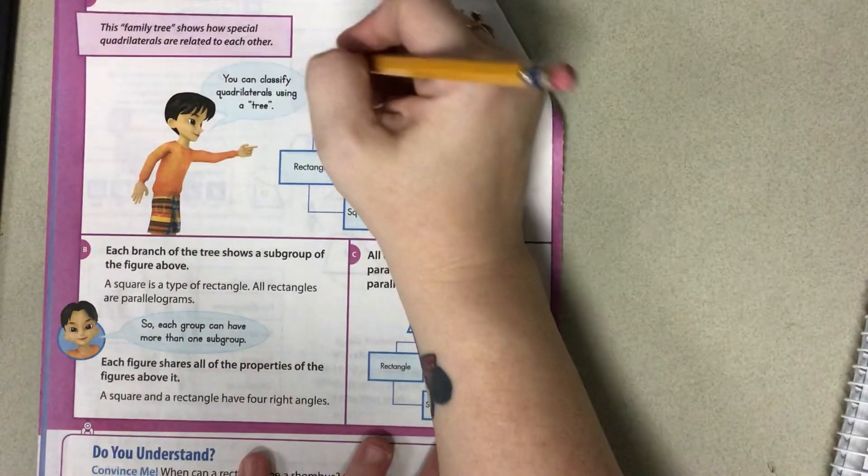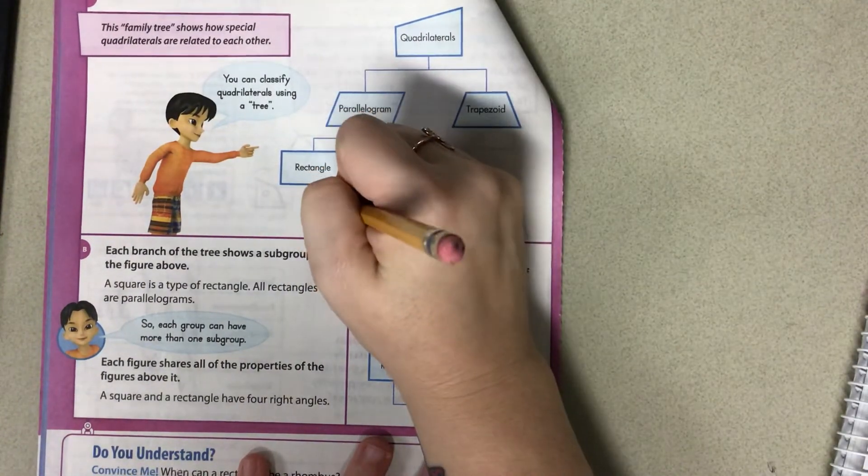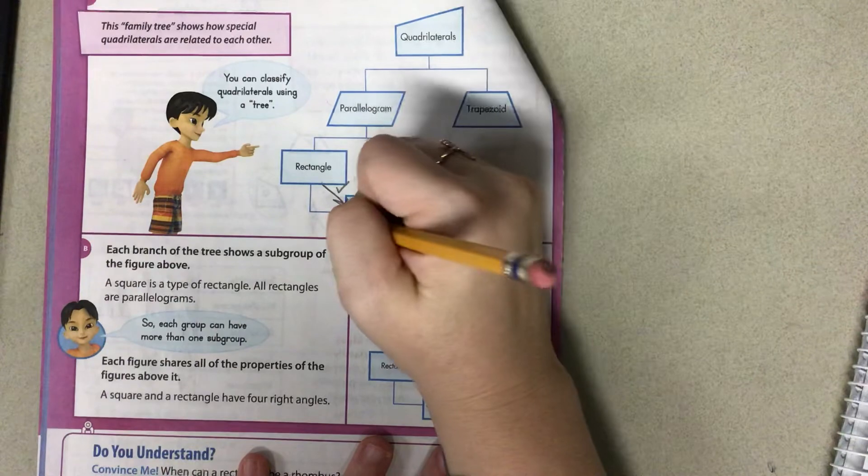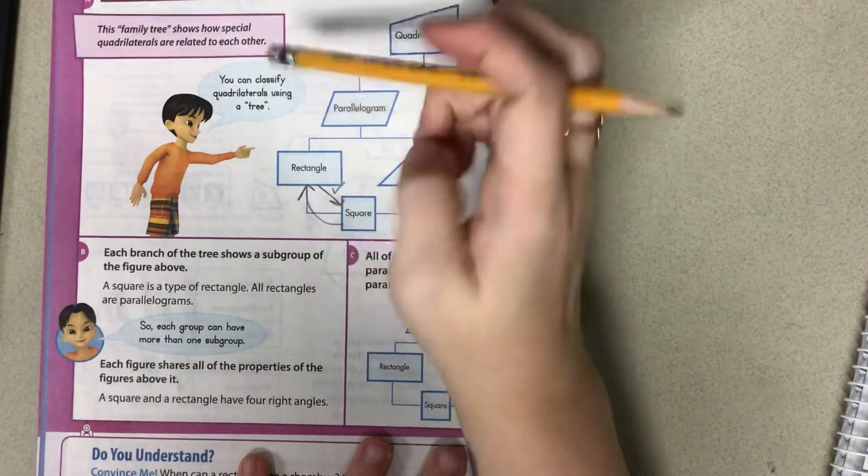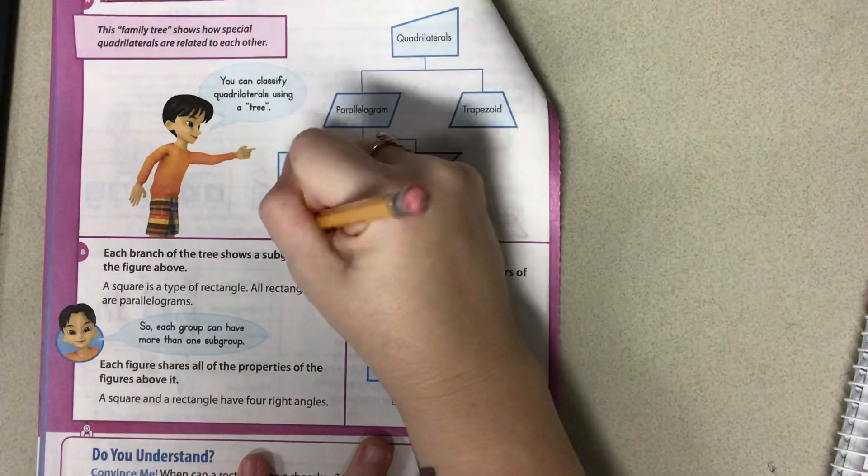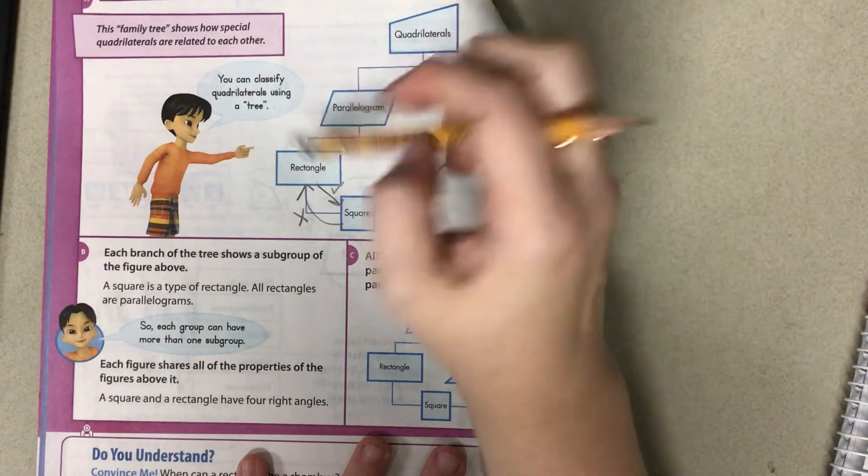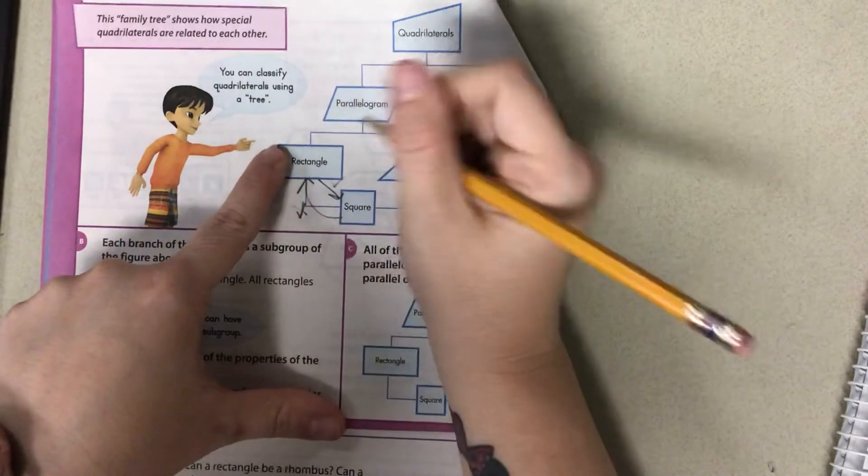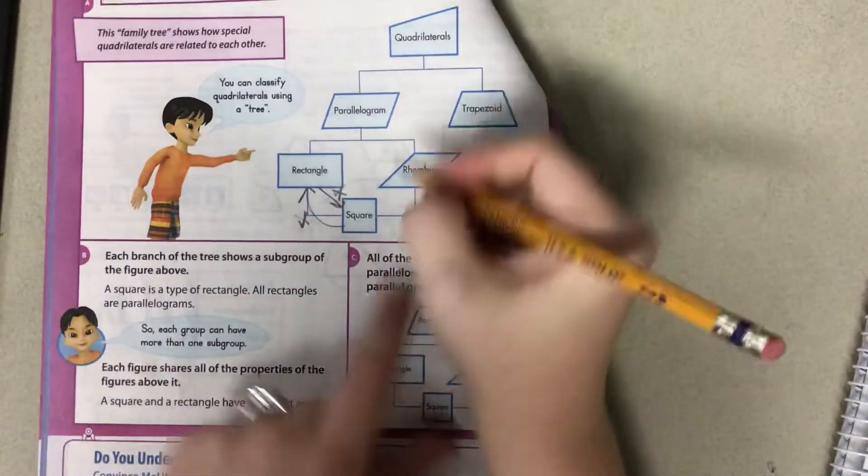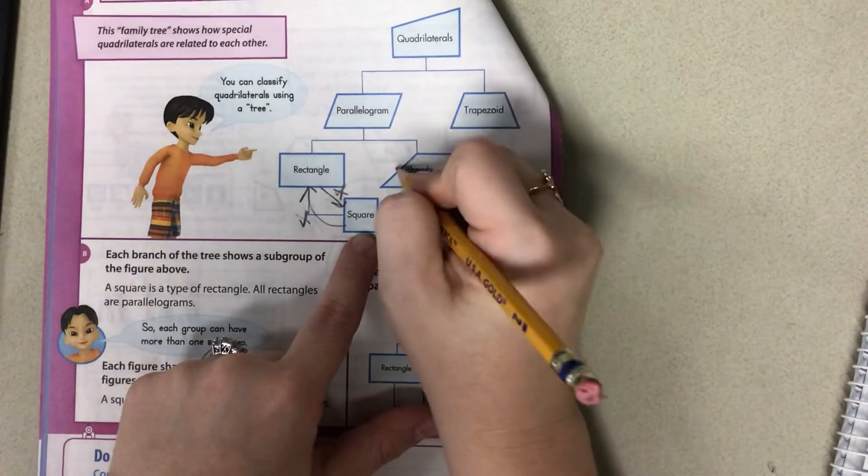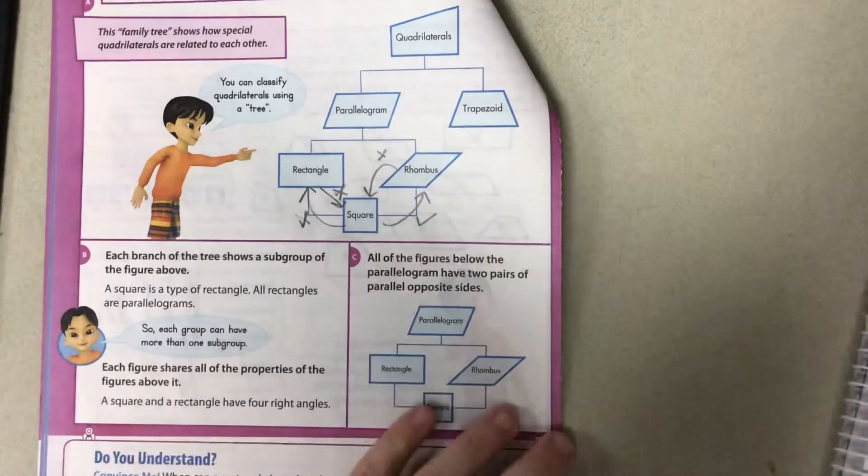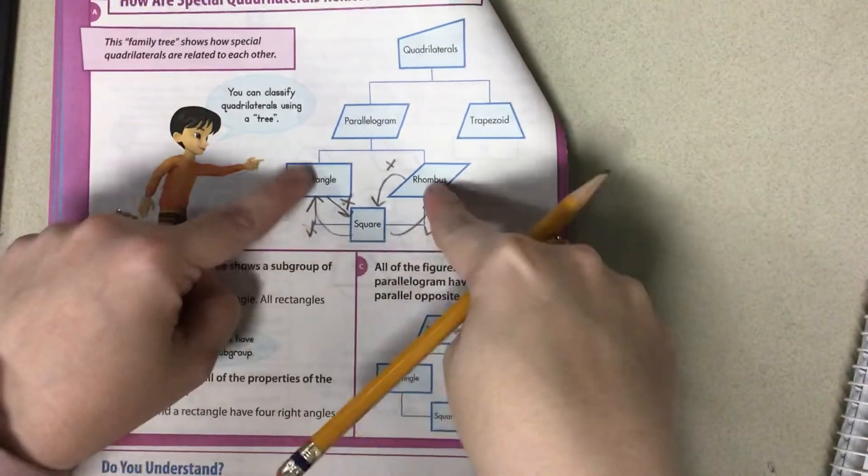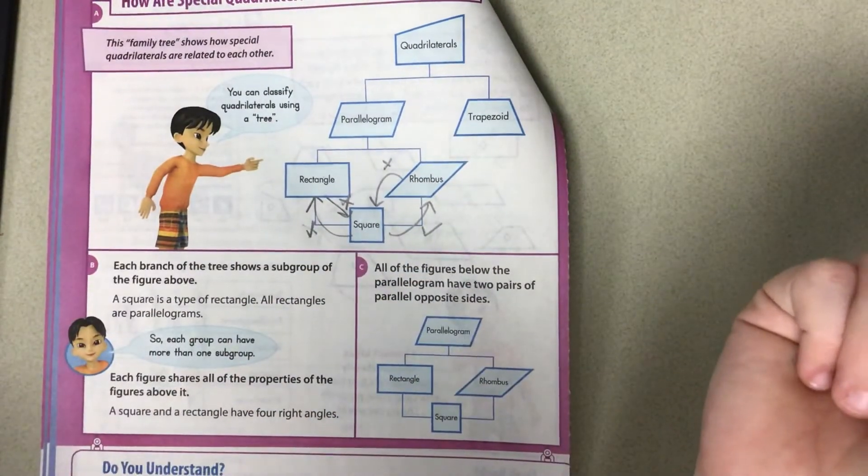So remember when you're reading it, this can be this, but this cannot be this. Oh, I'm sorry. I have it backwards. A square can be a rectangle. A rectangle cannot be a square. A square can be a rhombus, but a rhombus cannot be a square. So they have this in common.